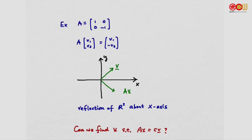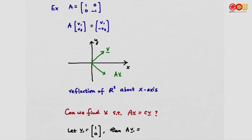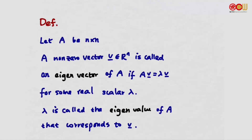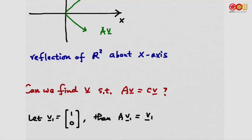Now, a question. We know what A is like and what it does to a vector V. So after we apply A to V, we still get the same vector V but with a scalar C. Can we find such V? For example, let's say we have V1 equal to the standard vector (1, 0). Then AV1 would be V1 again. So in this case, the scalar C is simply equal to 1.